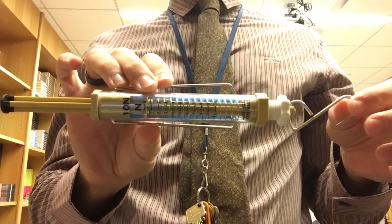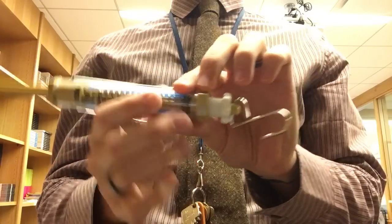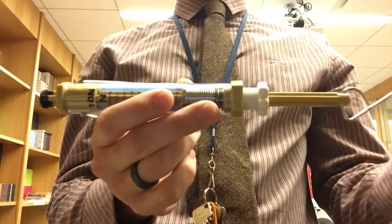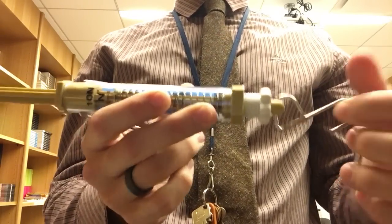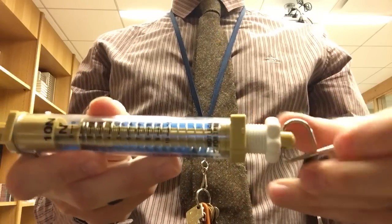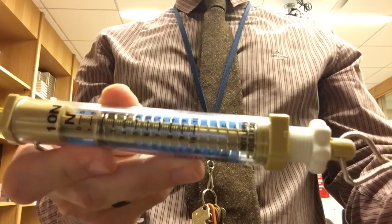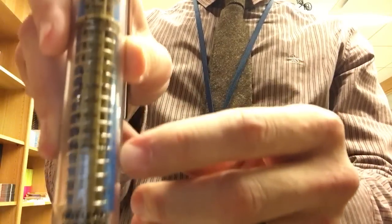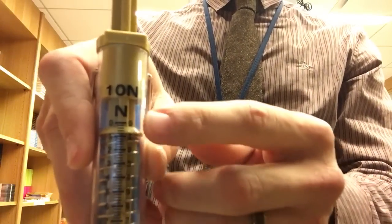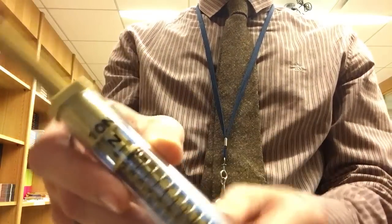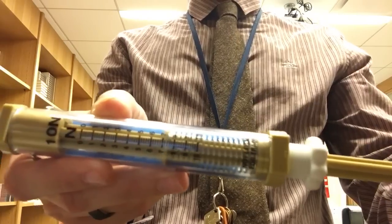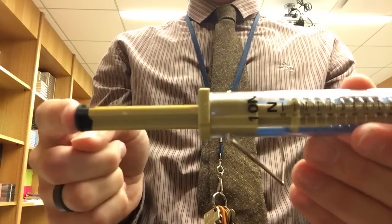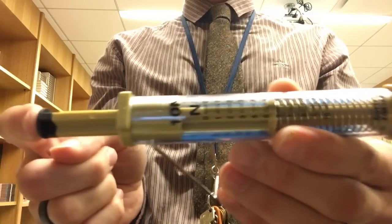This is called a spring scale, and these are special ones that have two sides. You can pull on this side, and you can see the reading goes up. This one goes from 0 to 10 at the bottom. It's a 10 newton spring scale, so you can pull and the reading goes up. You can also push on the end, and the reading goes up as well.